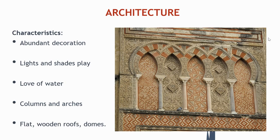In terms of architecture, we're going to see abundant decoration, a lot of play between light and shadow, and a love of water. You're going to see a lot of gardens and water motifs because these are people that originally come from the desert. Remember how we looked at the Persian Empire and the word paradisia — the paradise and the matching of the garden with paradise — we're going to see this imagery in these Islamic empires as well. There are lots of columns and arches, and sometimes when building they just take a column right off a Roman building and put it into their own structures. The roofs are often wooden and flat, and in other parts of the empire you see the use of domes.